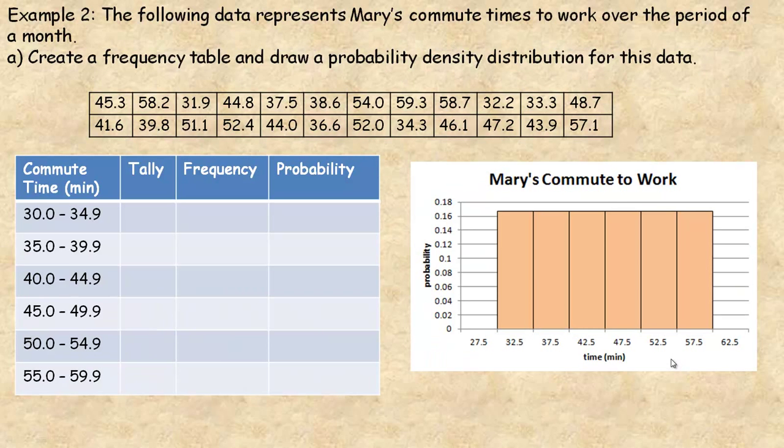On to example 2 in the next page. The following data represents Mary's commute times to work over the period of a month. We're going to create a frequency table and then draw the probability density distribution. My first time is, and I've broken this up into 5-minute long intervals, so 30 to under 35, 35 to under 40, 40 to 44.9, etc.